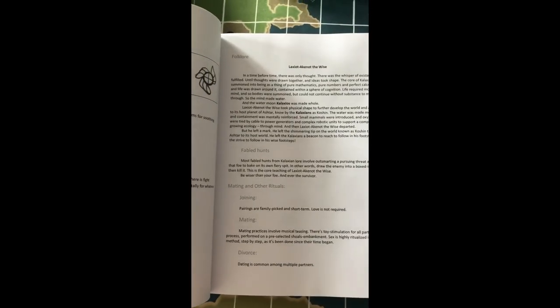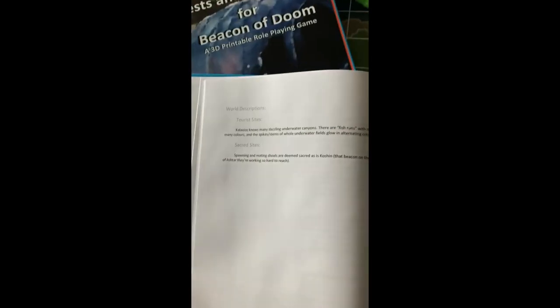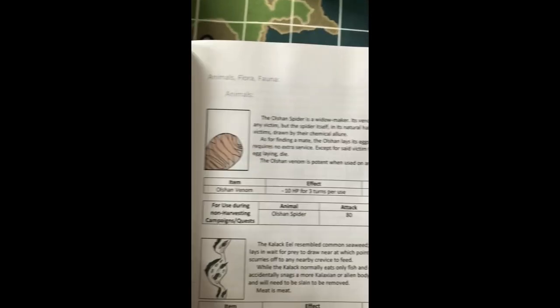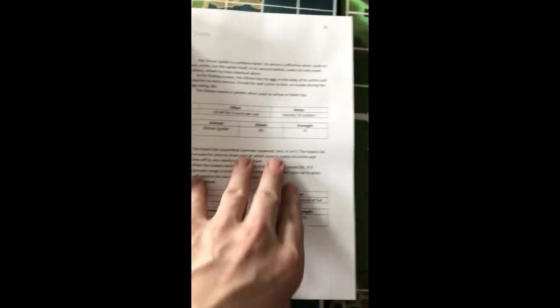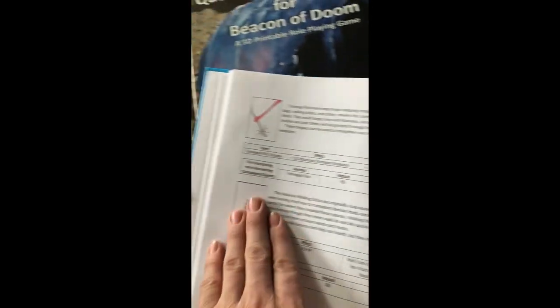Again, their lore of Laxiot. Achanal the Wise in this case. How do they mate? Do they allow divorce? Not everyone does. Tourist sites. Sacred sites. Animals. Flora and fauna. For each world there's five of each. Describes what it is. What it does. The item. The effect. Notes.